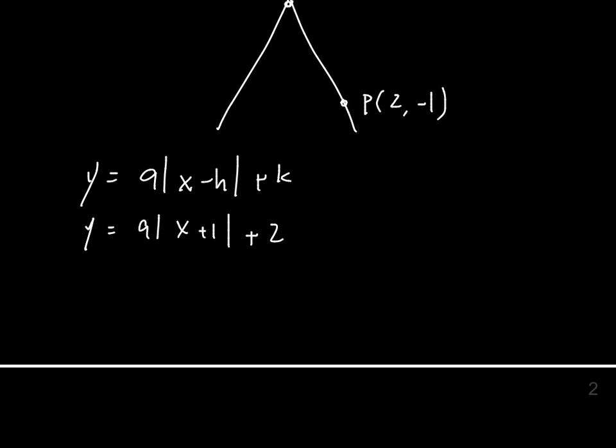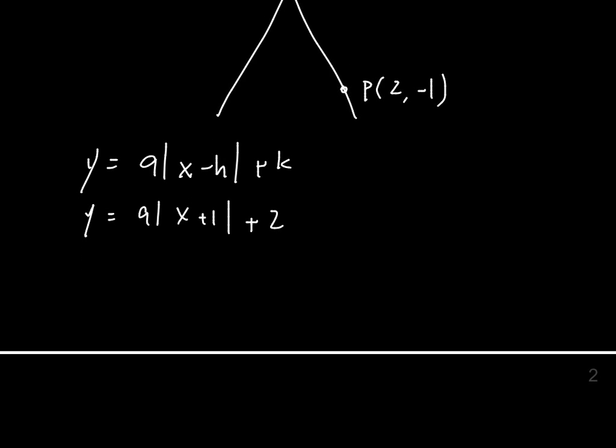Since you have point P, you can substitute P into your x and y, so that you have minus 1 equals a absolute value of 2 plus 1 plus 2. So that's just minus 1 equals 3 times a plus 2.